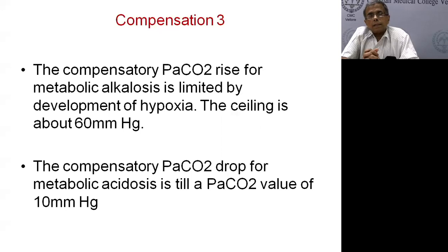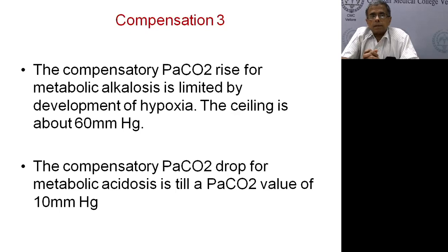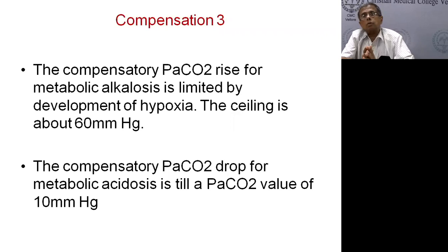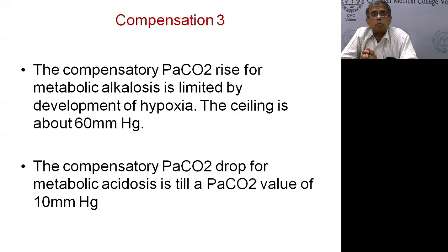In metabolic alkalosis, you would expect CO2 to rise, buffering the pH change. But this has a limiting factor because you cannot reduce ventilation indefinitely without causing hypoxia — the ceiling is about PCO2 of 60. Similarly, the CO2 doesn't drop below 10 for a compensated response. If values are beyond these limits, a second disorder is likely driving the respiratory system.